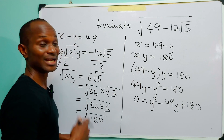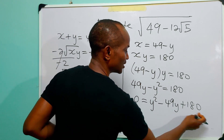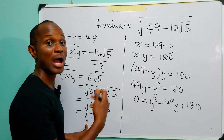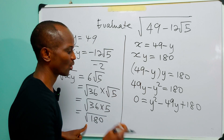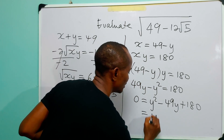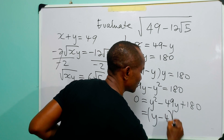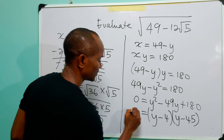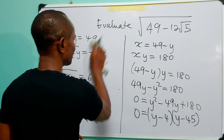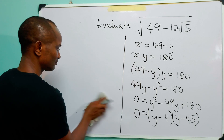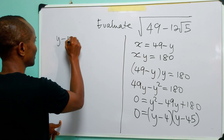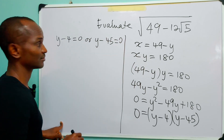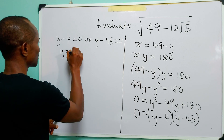Now this is a quadratic equation that we can factorize, because the two factors of 180 that add up to minus 49 are minus 45 and minus 4. So we have (y minus 4)(y minus 45) equals 0, from which y minus 4 equals 0 or y minus 45 equals 0, giving us y equals 4 or y equals 45.